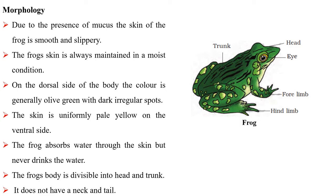Morphology: Due to the presence of mucus, the skin of the frog is smooth and slippery. The frog's skin is always maintained in a moist condition. On the dorsal side of the body, the color is generally olive green with dark irregular spots. The skin is uniformly pale yellow on the ventral side. The frog absorbs water through the skin but never drinks water. The frog's body is divisible into head and trunk. It does not have a neck and tail.